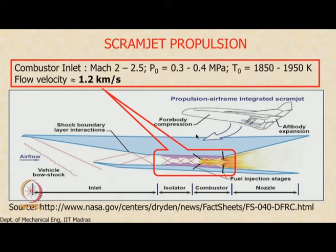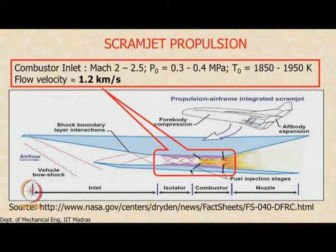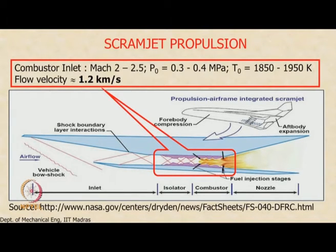The most challenging feature in designing the combustor is the flow velocity, which is about 1.2 km per second. The axial velocity of the flow as it enters the combustor is of the order of 1.2 km per second. Current scramjet engine designs are looking at combustors about 1 meter long, which means the fuel or air will stay in the combustor for only about 1 millisecond.